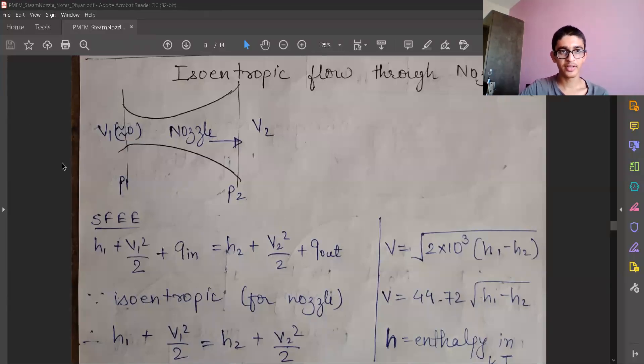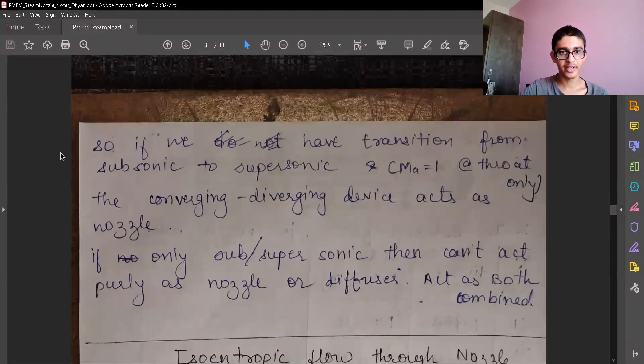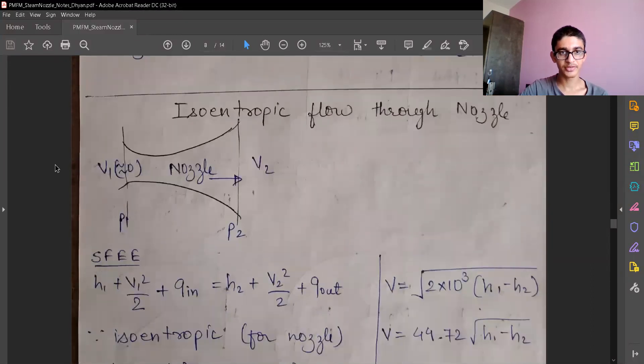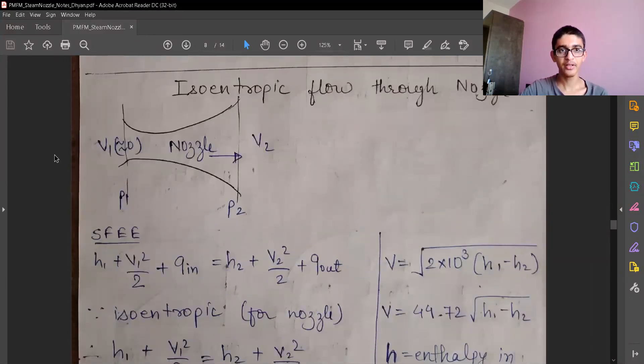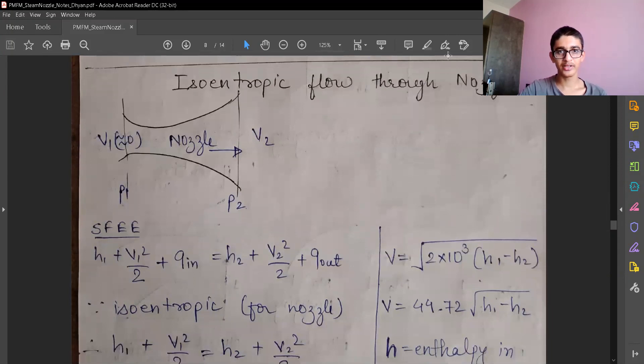Okay, so till now we have seen the nozzle configuration and diverging-converging type of nozzle and CD nozzle, converging-diverging combined. Now we will look at the isentropic flow, the mathematical formulations for energy transfer for a nozzle.